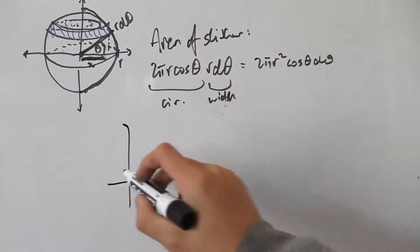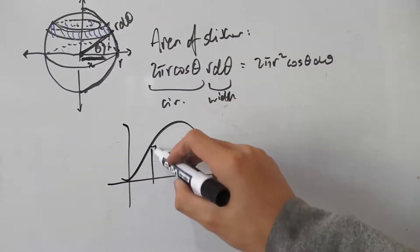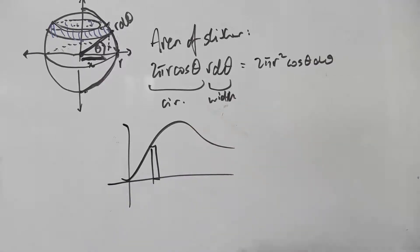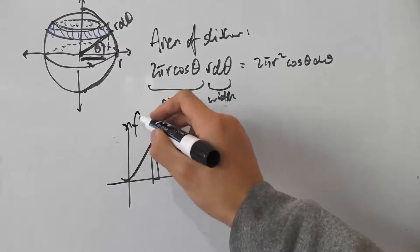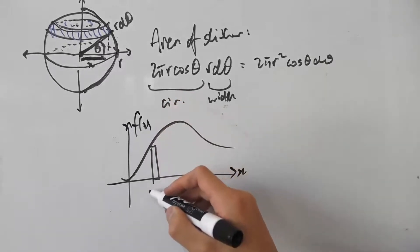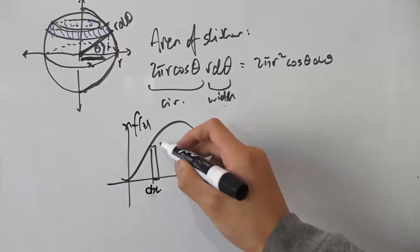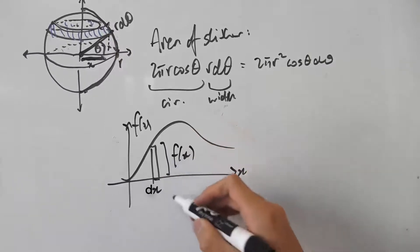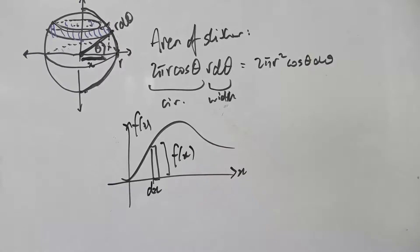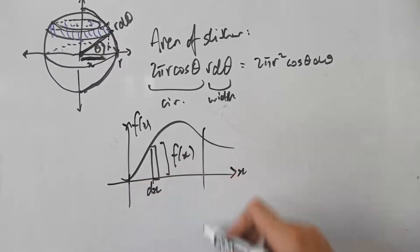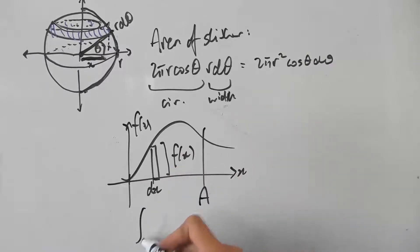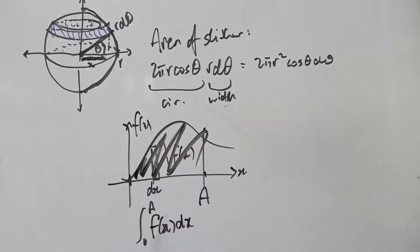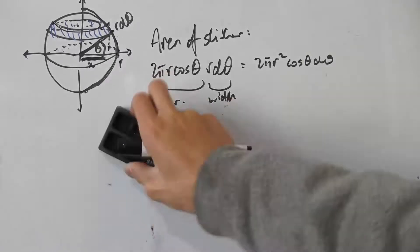Remember when we integrate some function, if we have an expression for this little rectangle here, where this is the x-axis and this is f(x), then this little width here is dx and we have the height as the function part. If we want to integrate this from 0 to some point a, that's just the integral from 0 to a of f(x) dx. That will give us the area of this whole thing here.